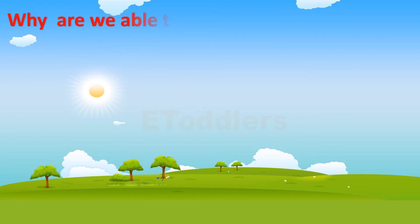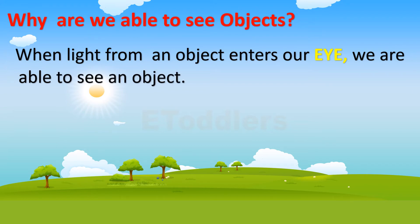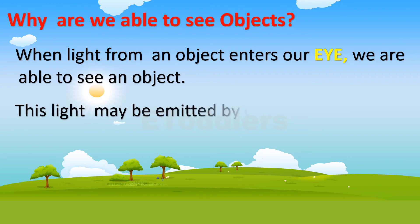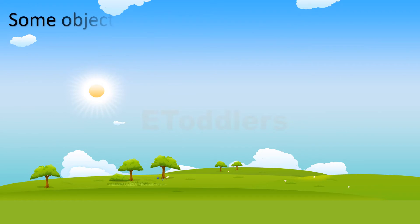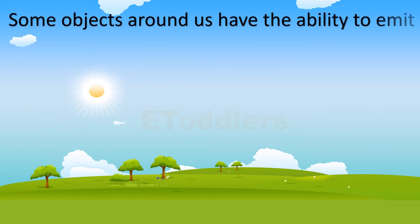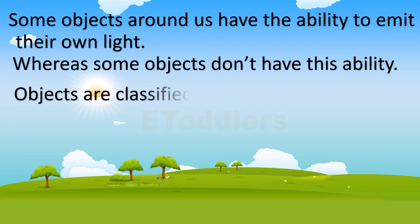Why are we able to see objects? When light from an object enters our eye, we are able to see it. This light may be emitted by the object or may be reflected by it. Some objects have the ability to emit their own light, whereas some do not. Based on this difference, objects are classified into two types.